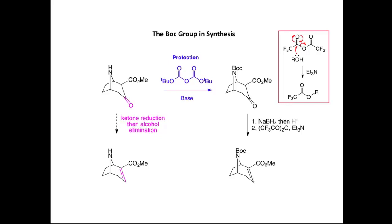All that remains is to remove the Boc group and convert it back into a secondary amine. We can do that using trifluoroacetic acid, TFA, and here is our deprotection step.